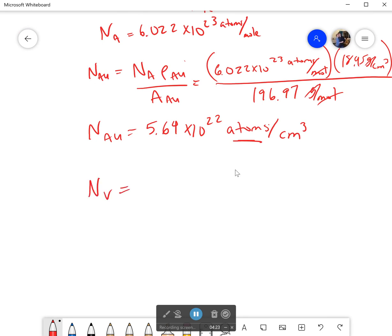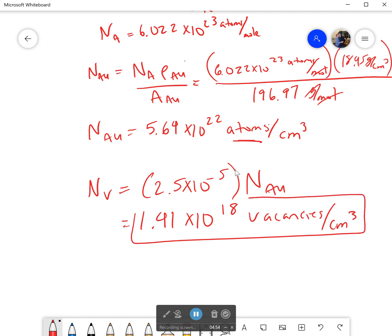So the number of vacancies is going to be equal to that fraction which is 2.5 times 10 to the negative 5 times the total number of spots. And if I multiply that out, that would come out to be 1.41 times 10 to the 18 vacancies per centimeter cubed. And you could stop there, you know we have all our numbers, let's go ahead and box that.